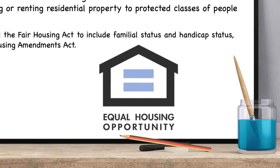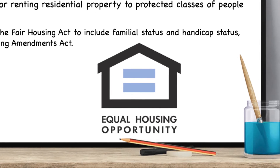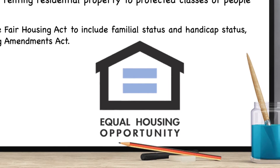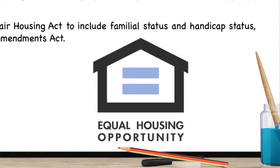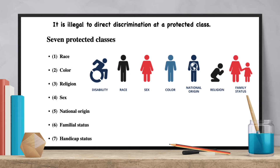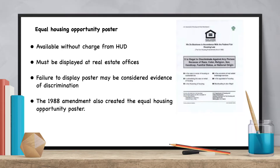The second protected class added by the 1988 amendment was handicap status, which includes individuals with mental or physical impairments that limit major life activities. The 1988 amendments also created the Equal Housing Opportunity Poster, which must be displayed in real estate offices and any other businesses involved in the housing industry.